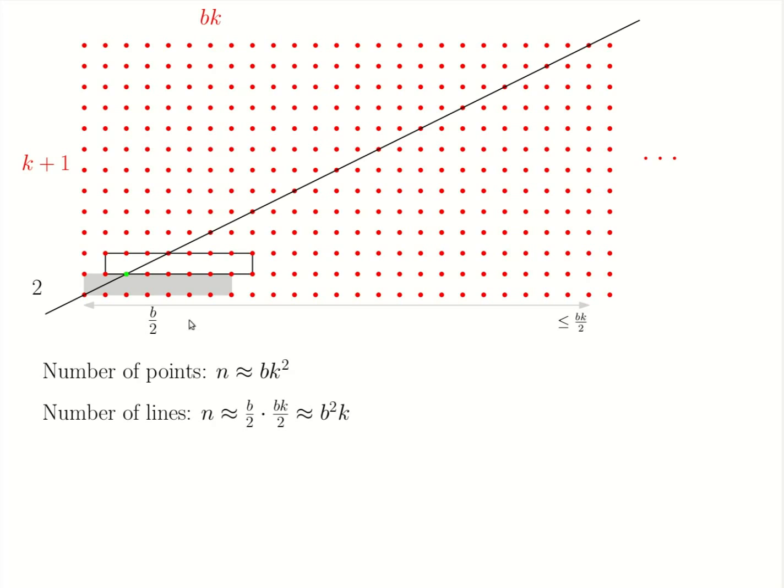In other words, I have at least b times k over 2 possible ways of shifting this line to the right. And thus, the total number of lines that I can draw is b squared times k asymptotically.